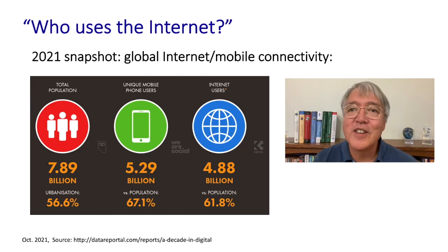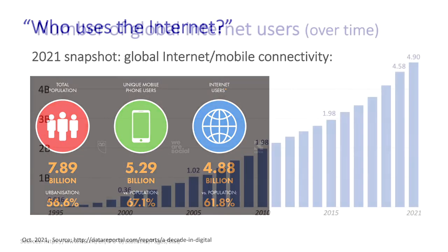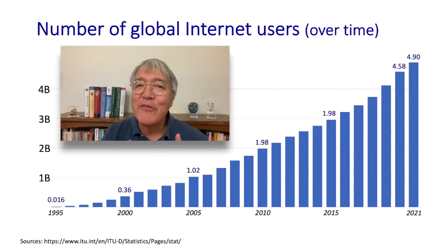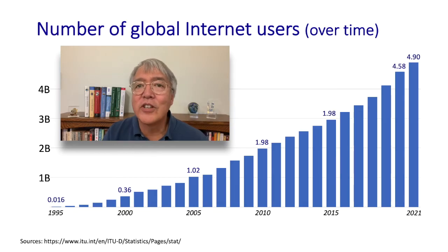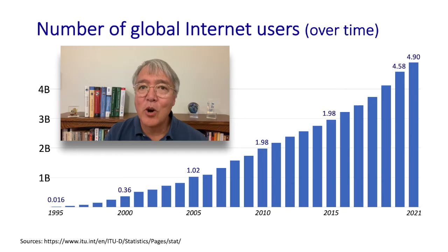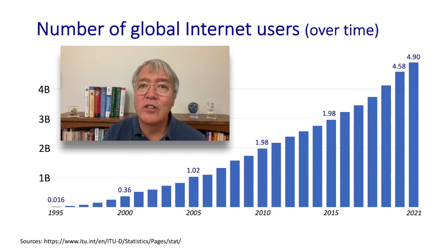This number has been growing over time. There are nearly 5 billion people connected to the internet today in 2022. In the year 2000, there were 360 million people attached to the internet — that's a growth of a factor of 15 over those intervening 22 years. And as you can see from the bar charts here, the rate of growth has stayed pretty constant over the last 20 years or so.